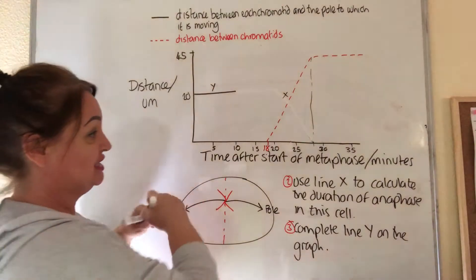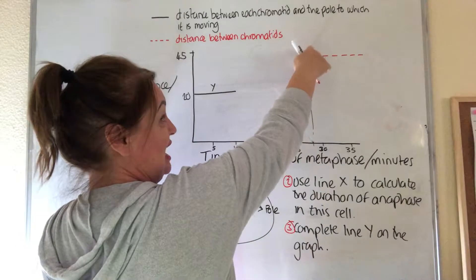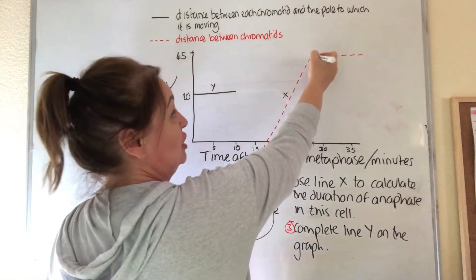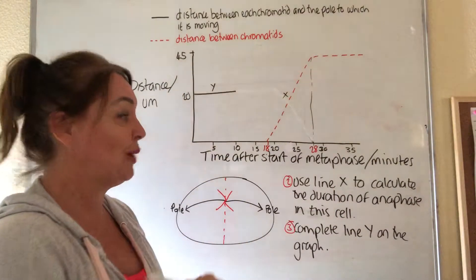So therefore, the distance between 18 and then here, the distance doesn't continue increasing. That means they're at the opposite pole. So if I move that down, that is at 28 minutes.